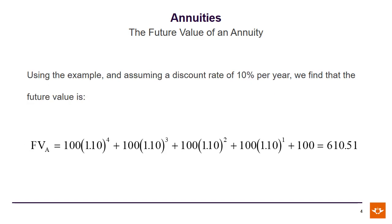Carrying on with our example from the previous lecture, where we had a 5-year annuity which paid R100 at the end of each of the 5 years. Here we begin using a discount rate of 10% per year. Using our generalized formula from the previous slide, our future value works out to R610.51.